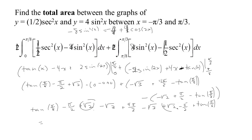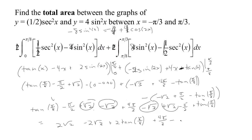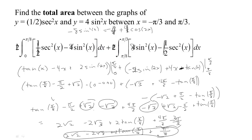Gathering everything together from both doubled integrals: two √2 terms give 2√2; two −√3 terms give −2√3; two tan(π/8) terms give 2tan(π/8); and the π terms: 4π/3 − π/2 − π/2 = 4π/3 − π = π/3. So the total area between the two curves is 2√2 − 2√3 + 2tan(π/8) + π/3.